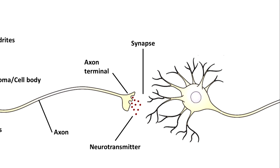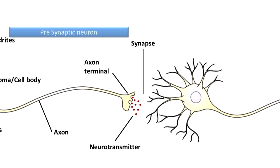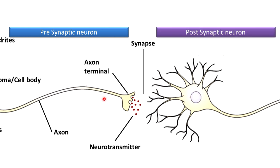The neurotransmitter released into the synaptic cleft will activate the next neuron. Comparing the two neurons, this one is the synapse or synaptic cleft. The neuron present before the synapse is called the pre-synaptic neuron — 'pre' meaning before. The successive neuron after the synapse is called the post-synaptic neuron — 'post' meaning after.